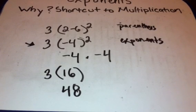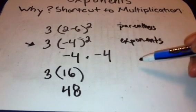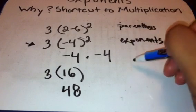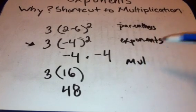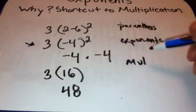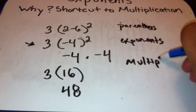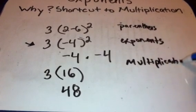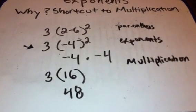That gave us a positive 16. After exponents, there's multiplication and division from left to right. We didn't have any division, just multiplication here. 3 times 16 is 48, and there you have it.